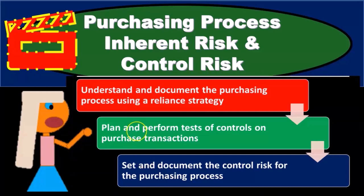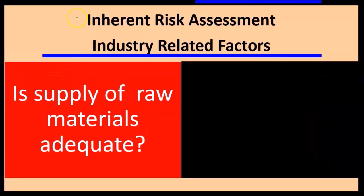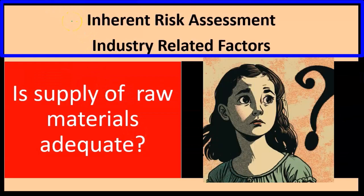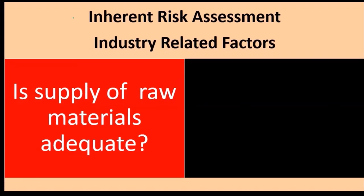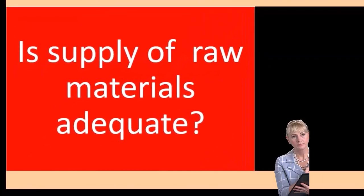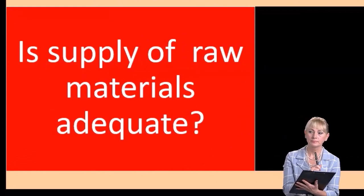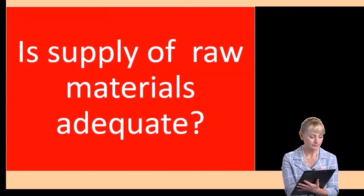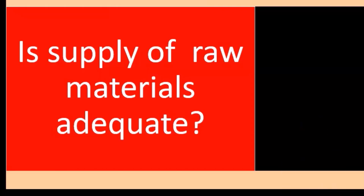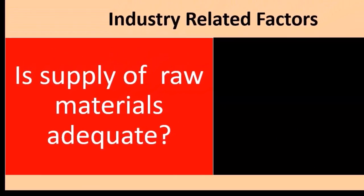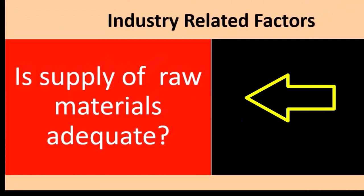When we think of inherent risk, we're thinking of those risks that are inherent to the organization. We want to remove the internal controls conceptually and ask: what is the inherent risk of this process without internal controls? That's just the inherent risk of the business model, the business setting, and the standard functions that are going to be in place within the process.